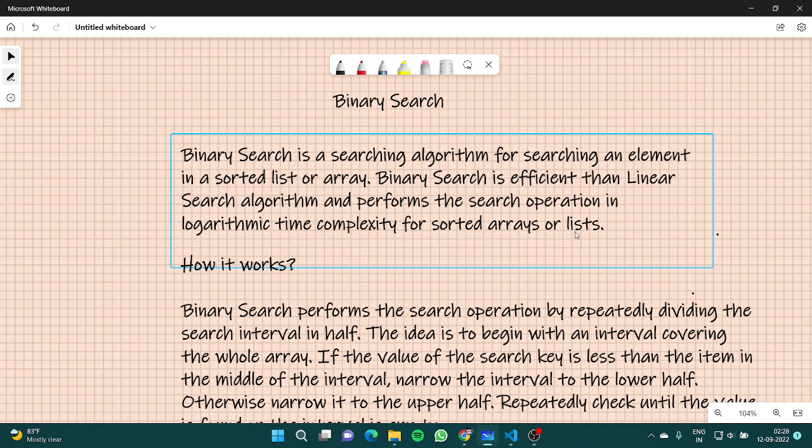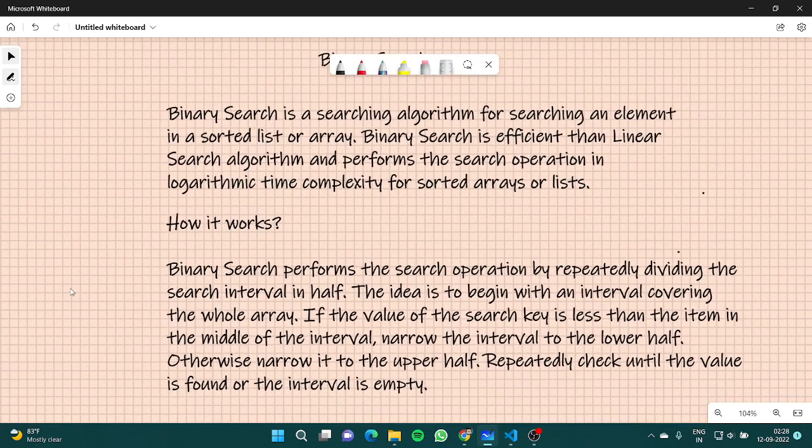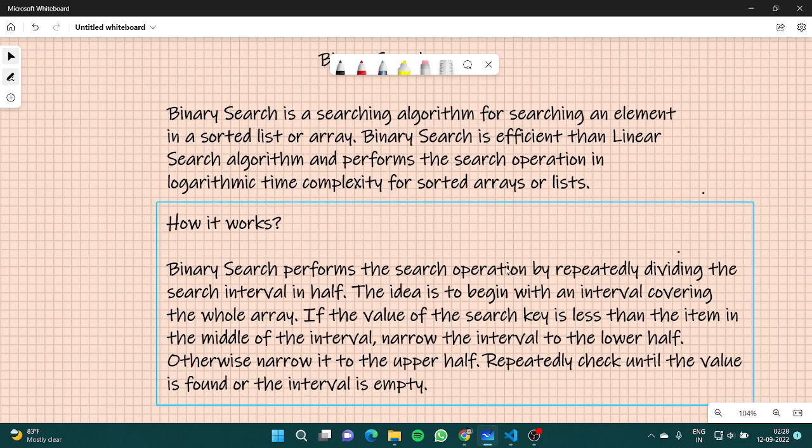I will be showing you how we have logarithmic time complexity. So let's see how binary search exactly works. Binary search basically performs search operations by repeatedly dividing the search interval in half. The idea is to begin with the interval covering the whole array. If the value of the search key is less than the item in the middle of the interval, narrow the interval to the lower half, otherwise narrow to the upper half. Repeatedly check until the value is found or the interval is empty.